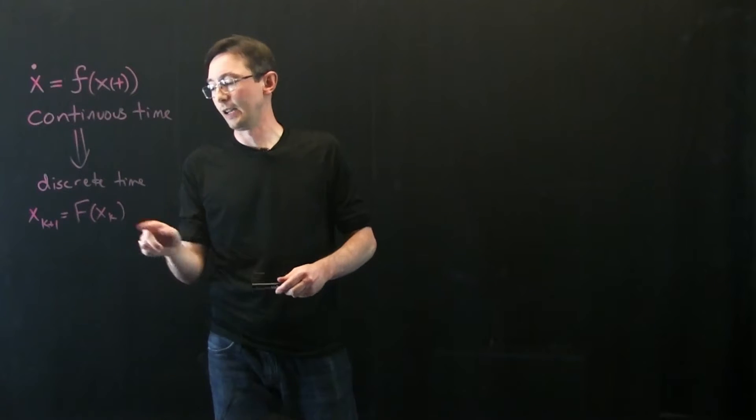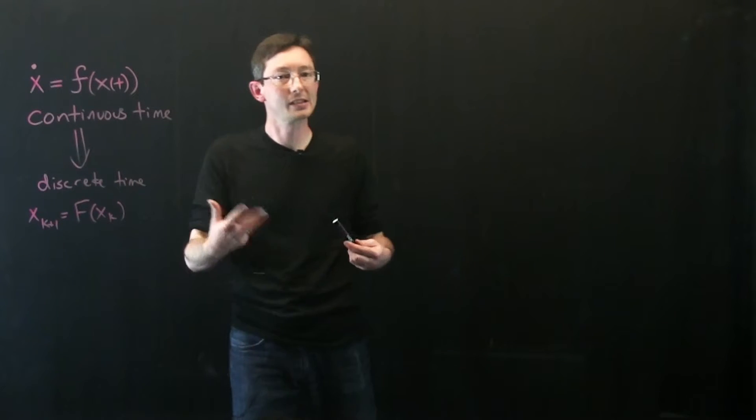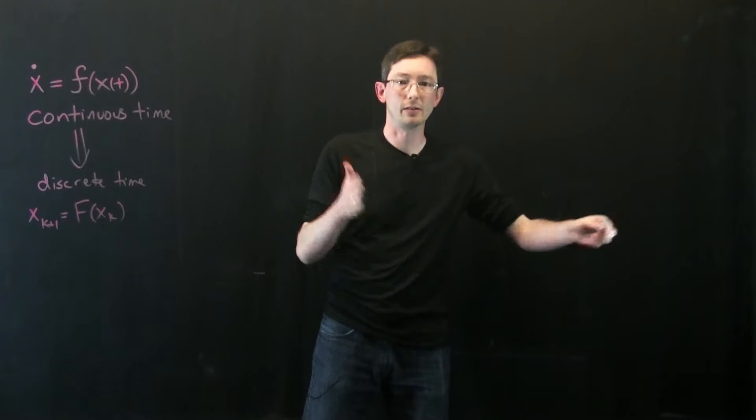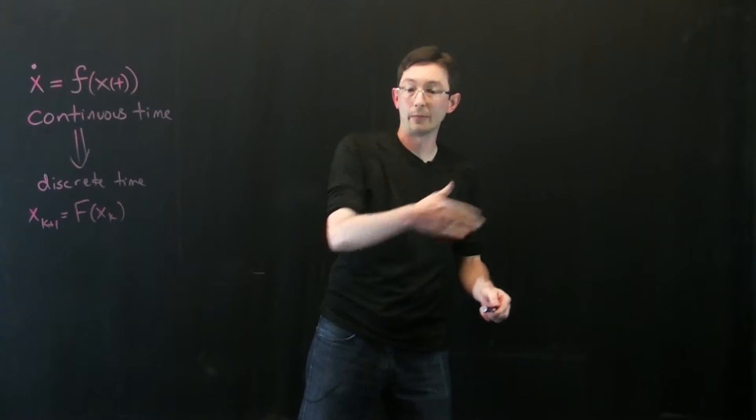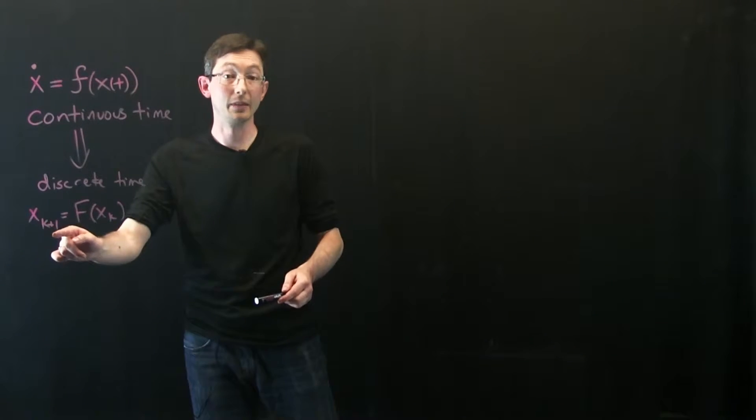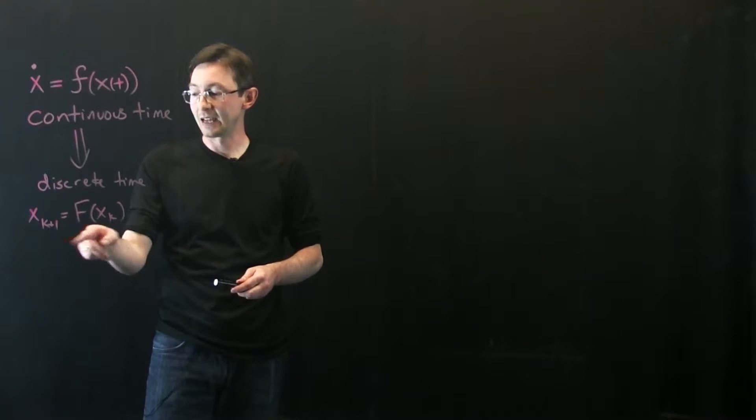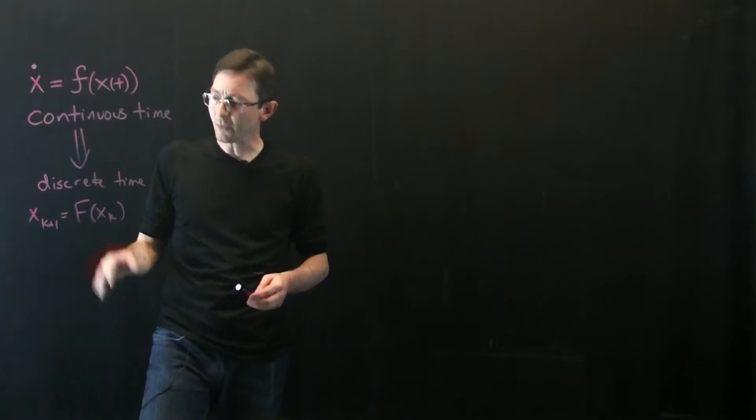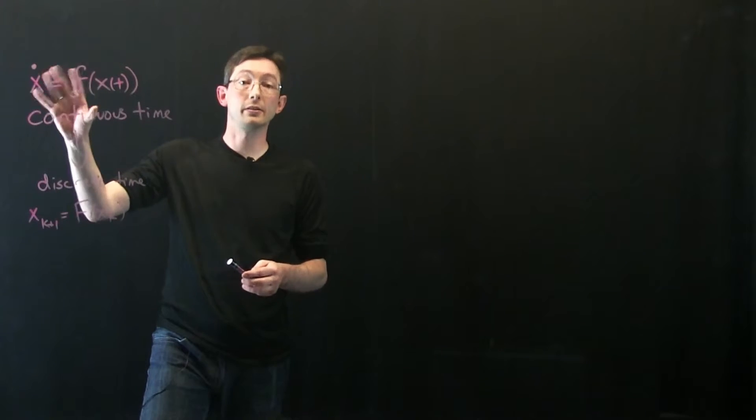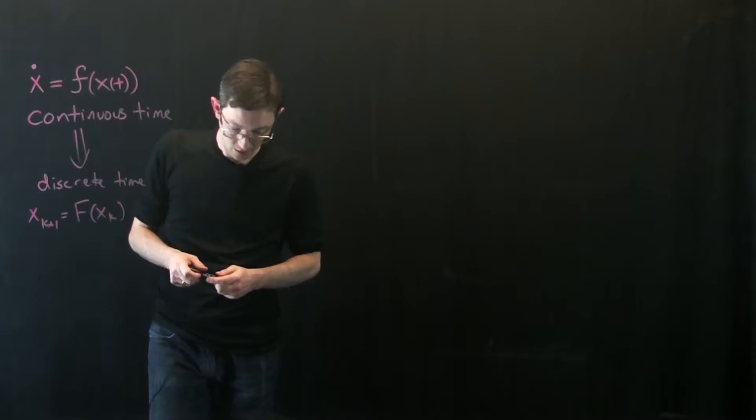Usually I think of the index k as the time step of an integrator. So I'm stepping my system forward in time from time k to time k plus 1. But in reality, this could be much more general. Discrete time dynamical systems are more general than continuous time systems.